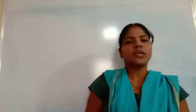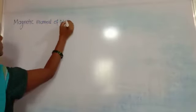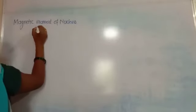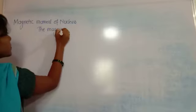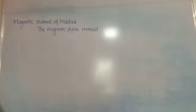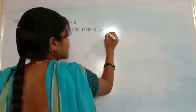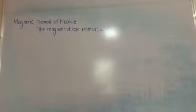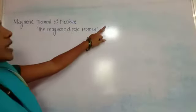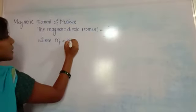In today's class we will see the magnetic moment of the nucleus — the magnetic dipole moment of the nucleus. The magnetic dipole moment associated with the nuclear spin is given by the expression eħ divided by 2mₚ, where mₚ is the rest mass of the proton.